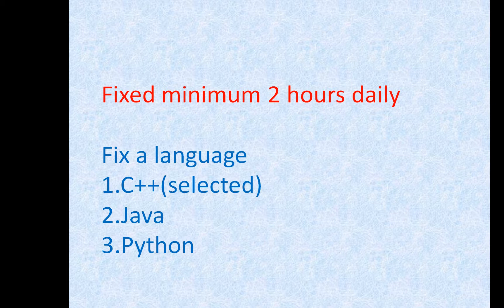The next thing was to fix a language. I know C, C++, Java, and Python basics, but I had to pick one language. I personally chose C++ because it supports OOP and also has the STL library. Whenever we are doing coding, at some point we need to sort an array, reverse it, or use a stack, queue, or priority queue — and the STL library is there to help.